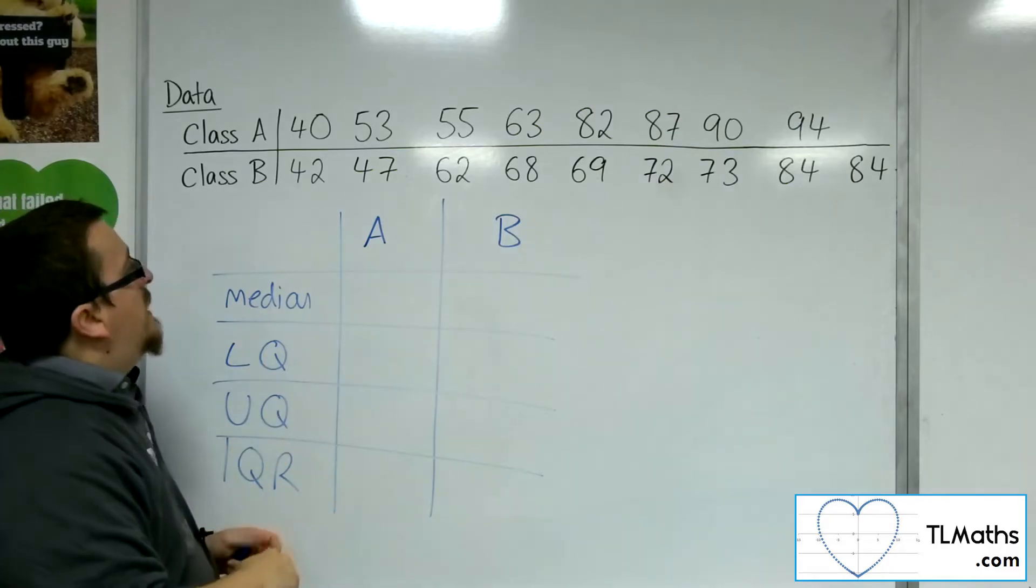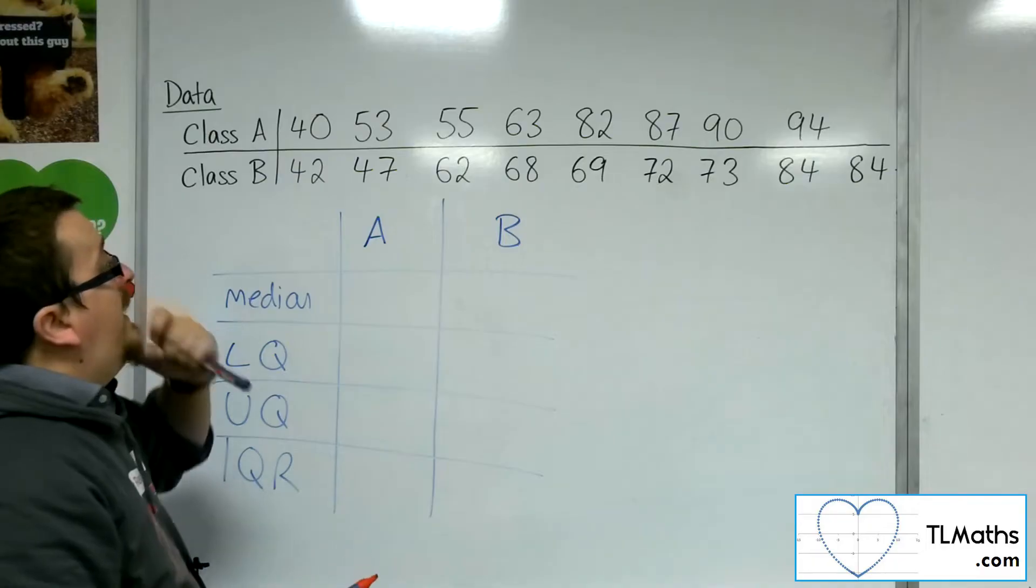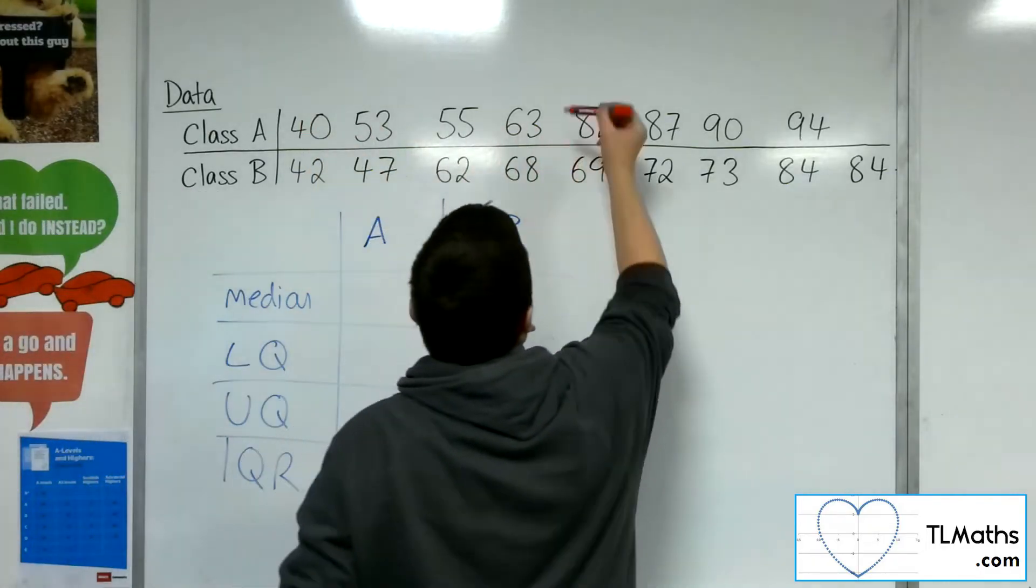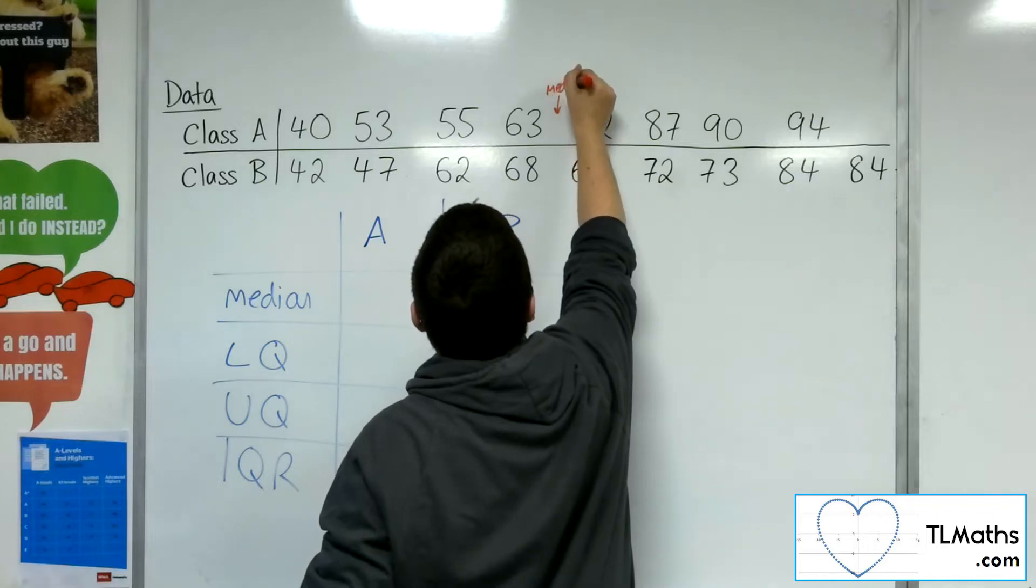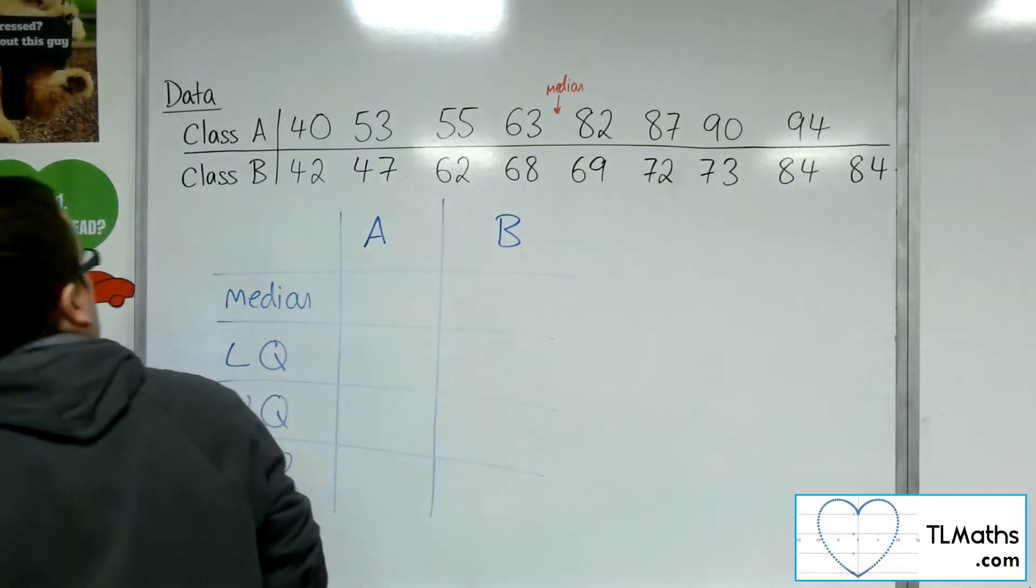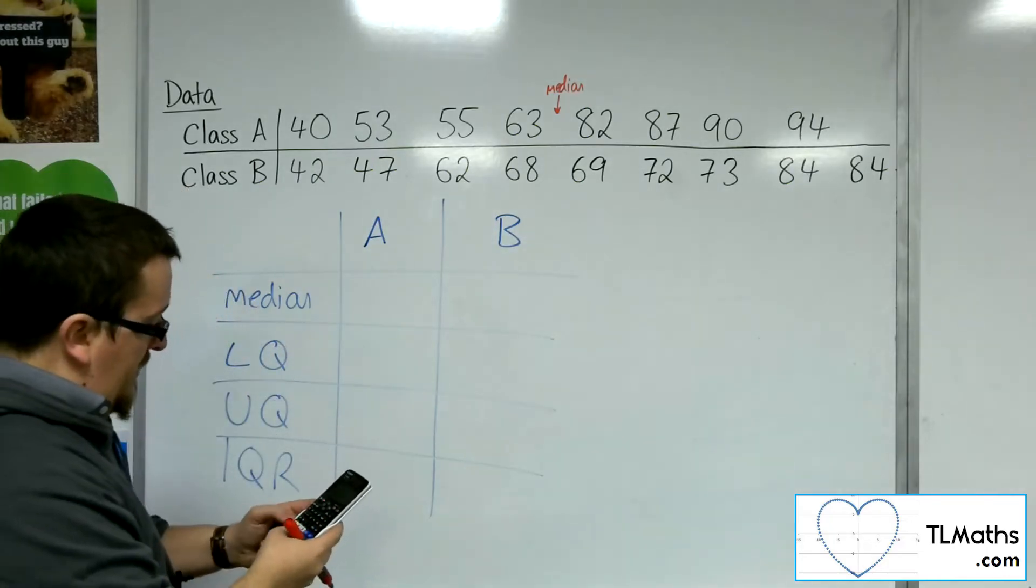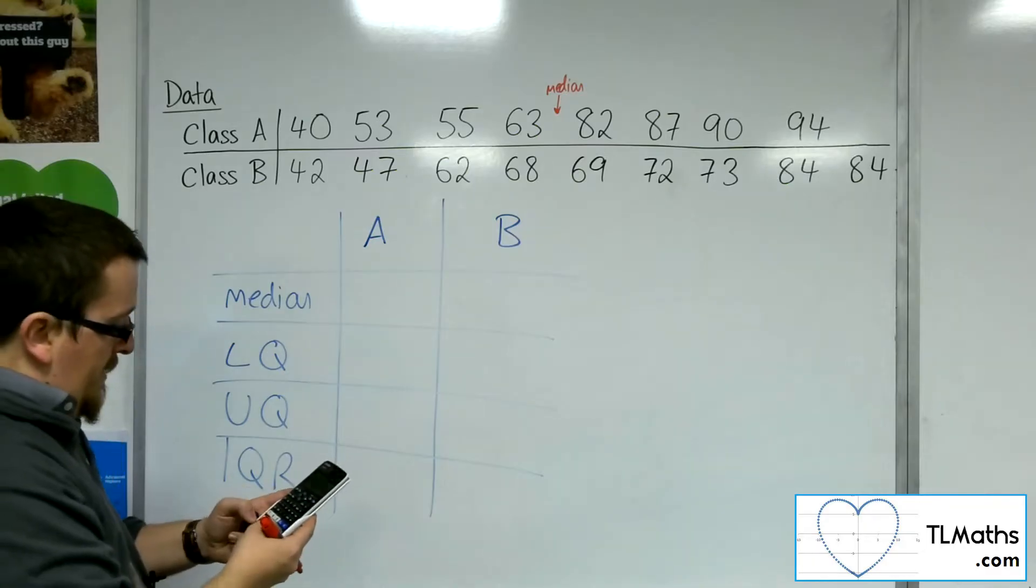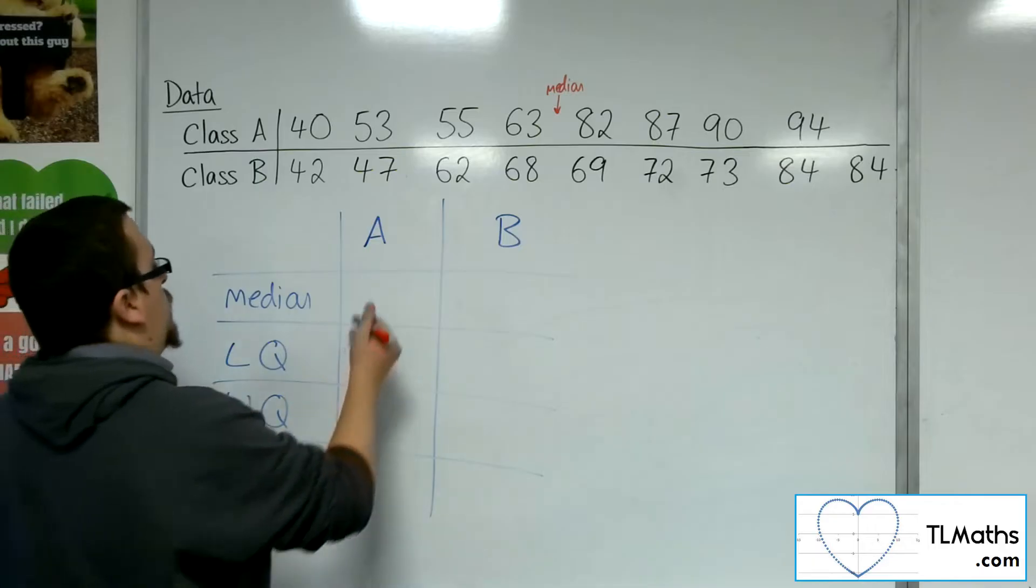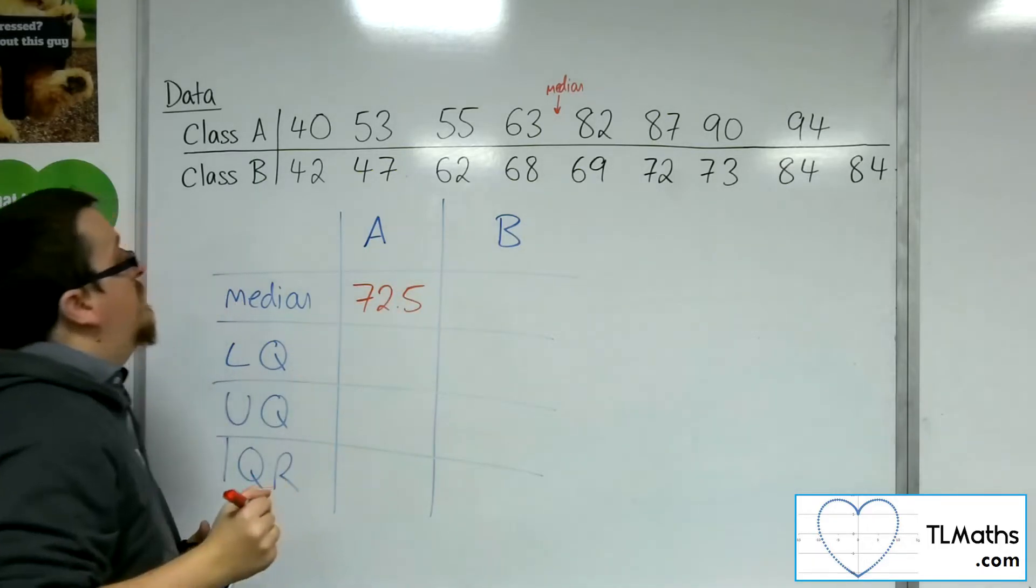So first of all, the median. So for class A, I've got eight bits of data. So the median will appear here, which will be halfway between 63 and 82. So what I can do is I can add 63 and 82 together and divide that by 2, and that gets me the halfway point. And that's 72.5. So that's the median for A.